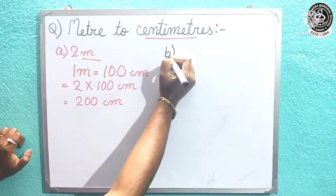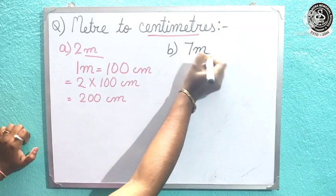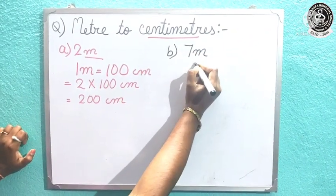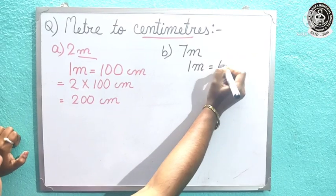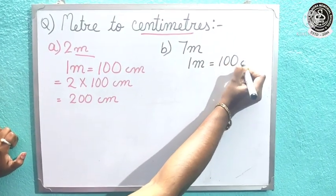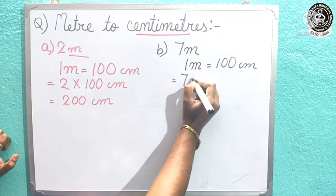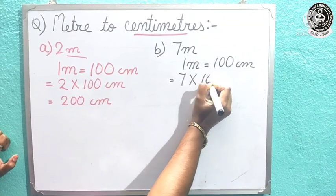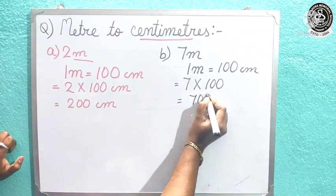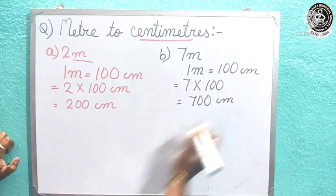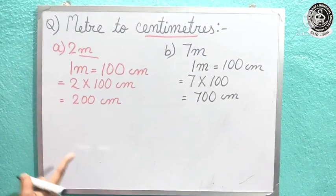Let us see one more example — question number B. The example is: if it is 7 meter, so what we will do — again, first we write that 1 meter is equal to 100 centimeter, then we will multiply 7 with 100, and it will be 700 centimeter.